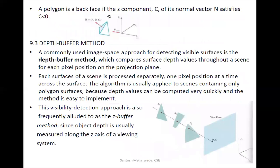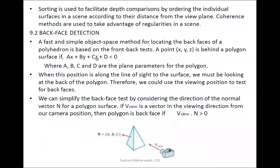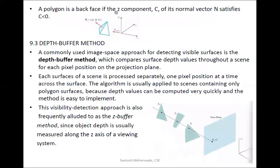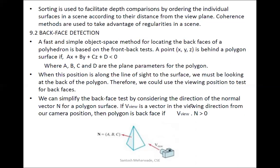A polygon is a back face if the z component C of its normal vector N satisfies C less than zero. The z value plays a very important role because it indicates whether the object and viewer are near to or far from each other. With respect to the viewer, the x-axis, y-axis, and z-axis are set up such that the z-axis determines the proximity between object and viewer. If C is less than zero, that face will be far from the viewer.